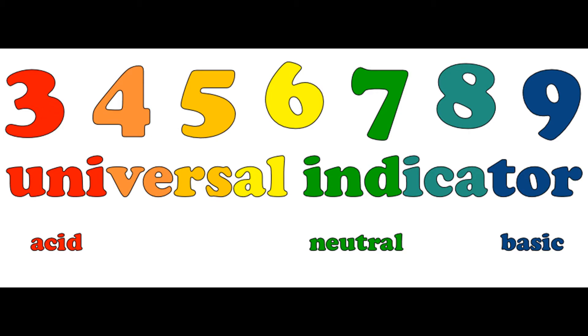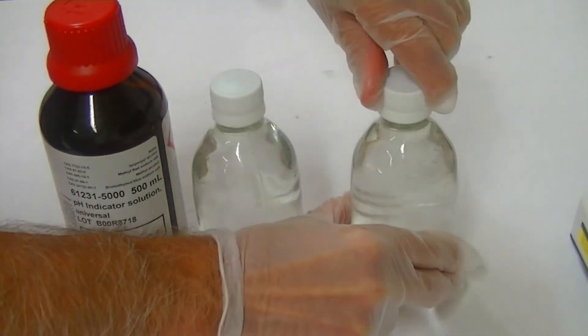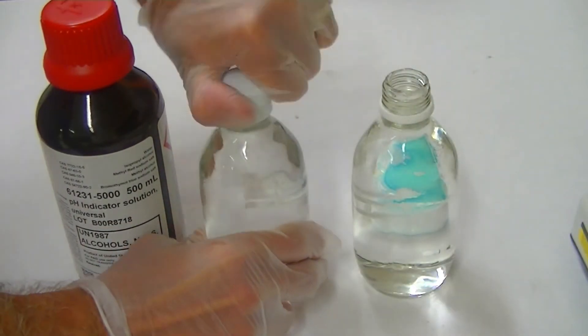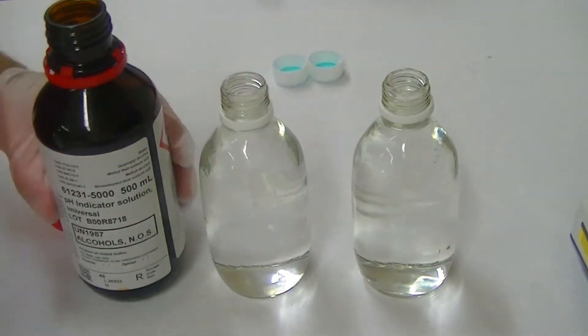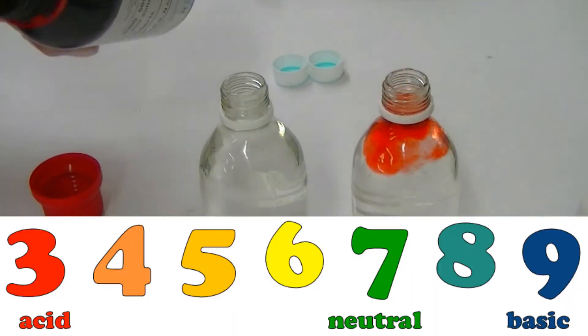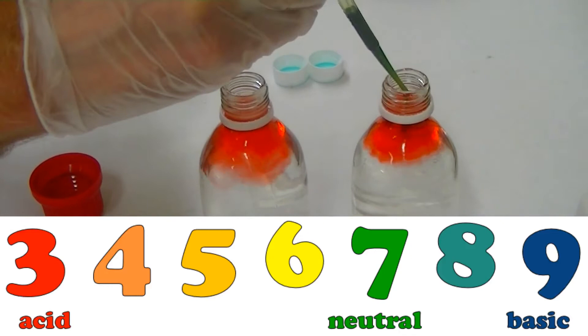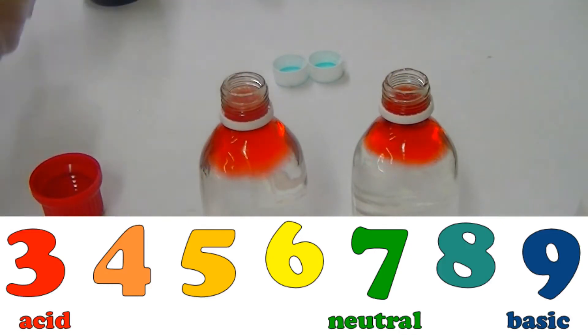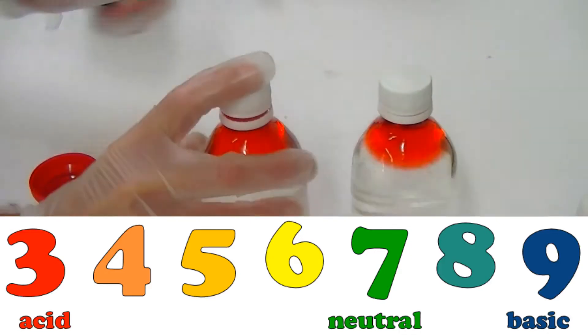Okay, let's open up the bottles of club soda and add in the universal indicator. Wow, that's a beautiful red color. It looks like the club soda is pretty acidic with a pH of 3.